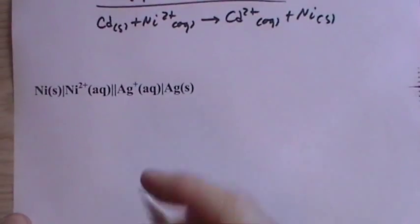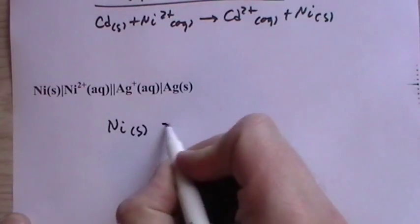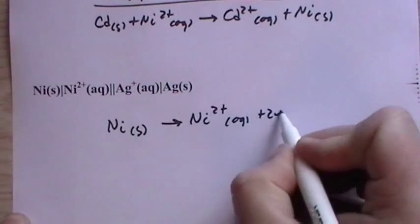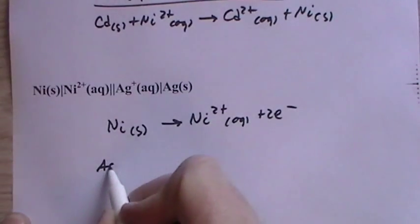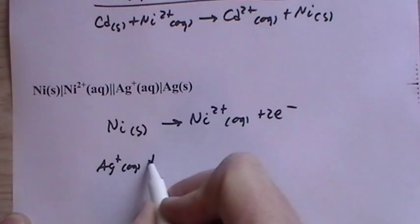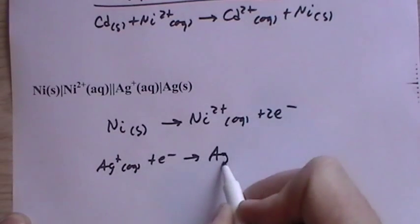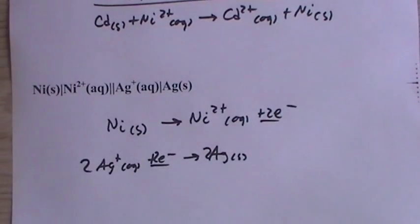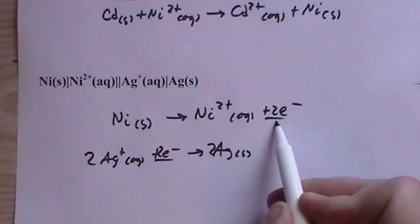Okay. How about this one? So we have nickel goes to nickel two ion plus two electrons. And then for silver, silver is what is reduced. So that's one electron. It goes to silver metal. So we have to multiply it through by two to balance out the electrons. If these electrons are given off, they must, we must accept the same amount in a balanced reaction.